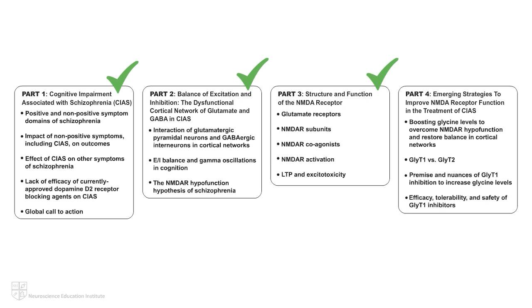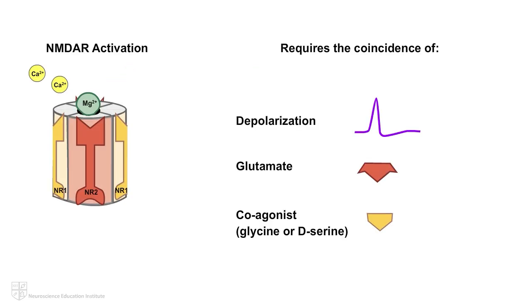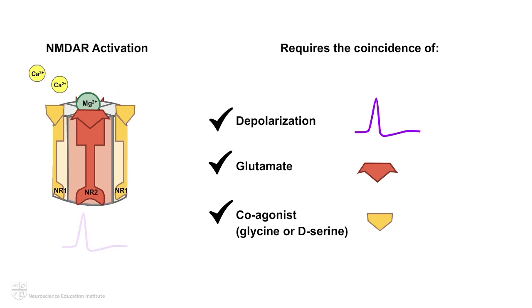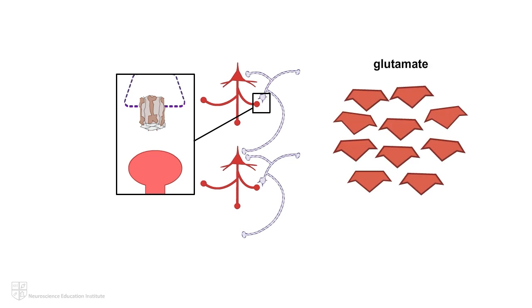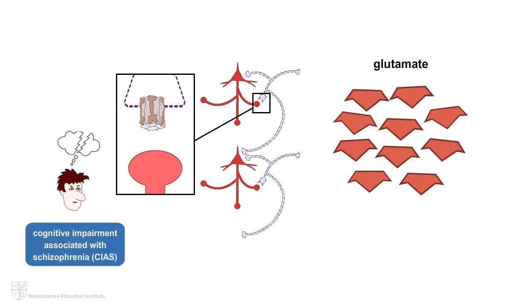As we explored in Part 3 of this four-part Mechanism of Action animation series, activation of the N-methyl-D-aspartate receptor, NMDAR, requires both the agonist glutamate and a coagonist like glycine or D-serine, in addition to membrane depolarization to remove the magnesium block from the ion channel at the center of the NMDAR. As noted, boosting glutamate levels in order to compensate for the NMDAR hypofunction we see in the Asynchronous Cortical Network Underlying Cognitive Impairment Associated with Schizophrenia, CIAS, is just not a feasible strategy.